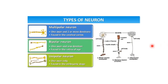There are three main types of neurons: multipolar, bipolar, and unipolar. Multipolar neurons have one axon and two or more dendrons. They are found in the cerebral cortex. Bipolar neurons have one axon and one dendron — hence the name bipolar, that is two. They are generally found in the retina of the eye. Unipolar neurons have one axon only and are found in the embryonic stage.